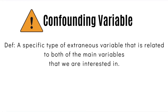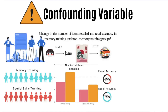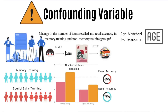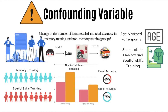Let's look at the possible confounding variables that could have affected recall accuracy and the number of items recalled in our memory training study. A common confound could be age. If the two training groups are not age-matched, then any difference in recall performance could not be attributed to the type of training session, because significant age differences can introduce differences in cognitive competencies, which then lead to differences in performance that are independent of the training session. The second confound is whether the experiment was undertaken in the same environment. If the two groups are tested in different environments, the conclusions about training effectiveness may be inaccurate, because different lab environments can either enhance or hinder one's cognitive abilities.